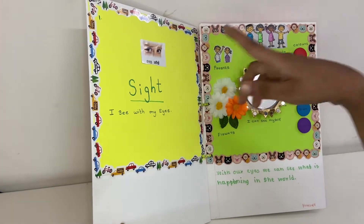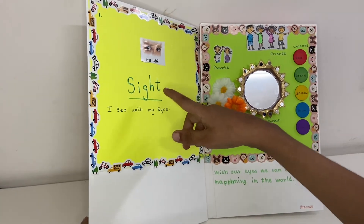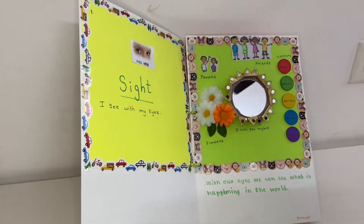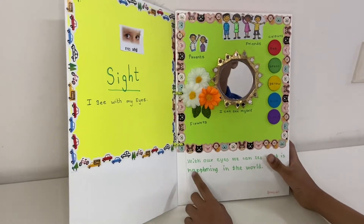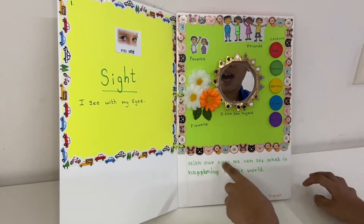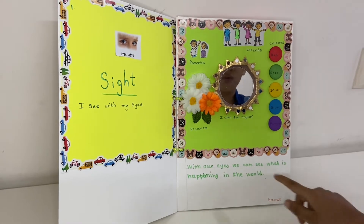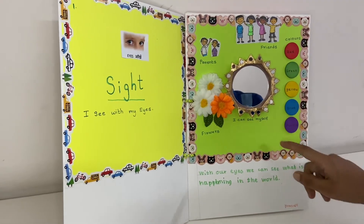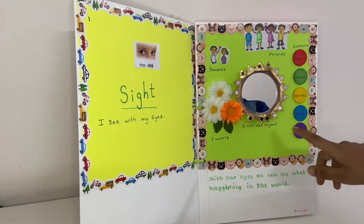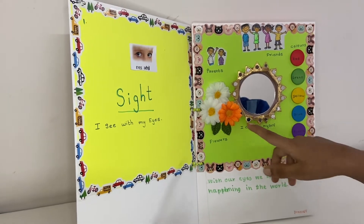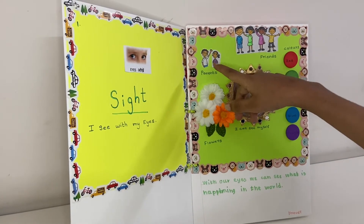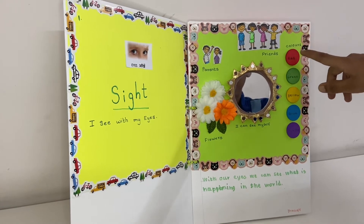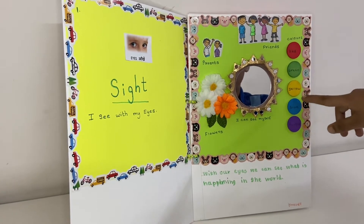Eyes in Hindi is called Ake. This is sight. I see with my eyes. So with our eyes, we can see what is happening in the world. I can see myself in the mirror. These are some flowers, these are my parents, these are my friends, these are some colours — red, green, yellow, blue and purple.